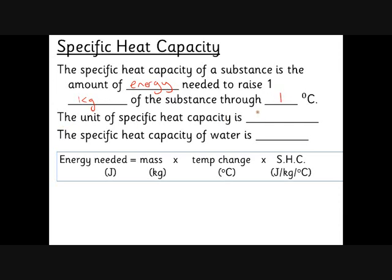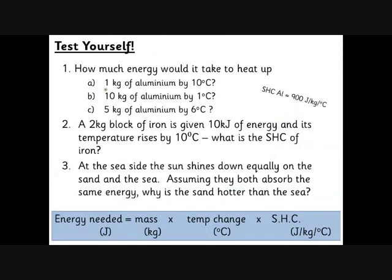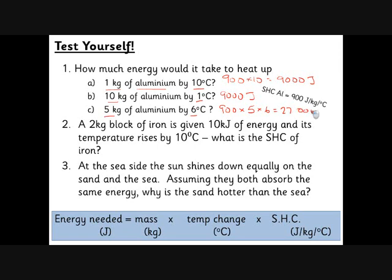The units for specific heat capacity are joules per kilogram per degree C. The specific heat capacity of water — you don't need to learn this, they'll give it to you — is 4,200 joules per kilogram per degree C. To heat one kilogram of aluminium by 10 degrees C: it's 900 joules to heat by one degree C, so 10 times as much is 9,000 joules. To heat 10 kilograms by one degree C is also 9,000 joules. To heat five kilograms by six degrees C: 900 times 5 times 6 is 27,000 joules.